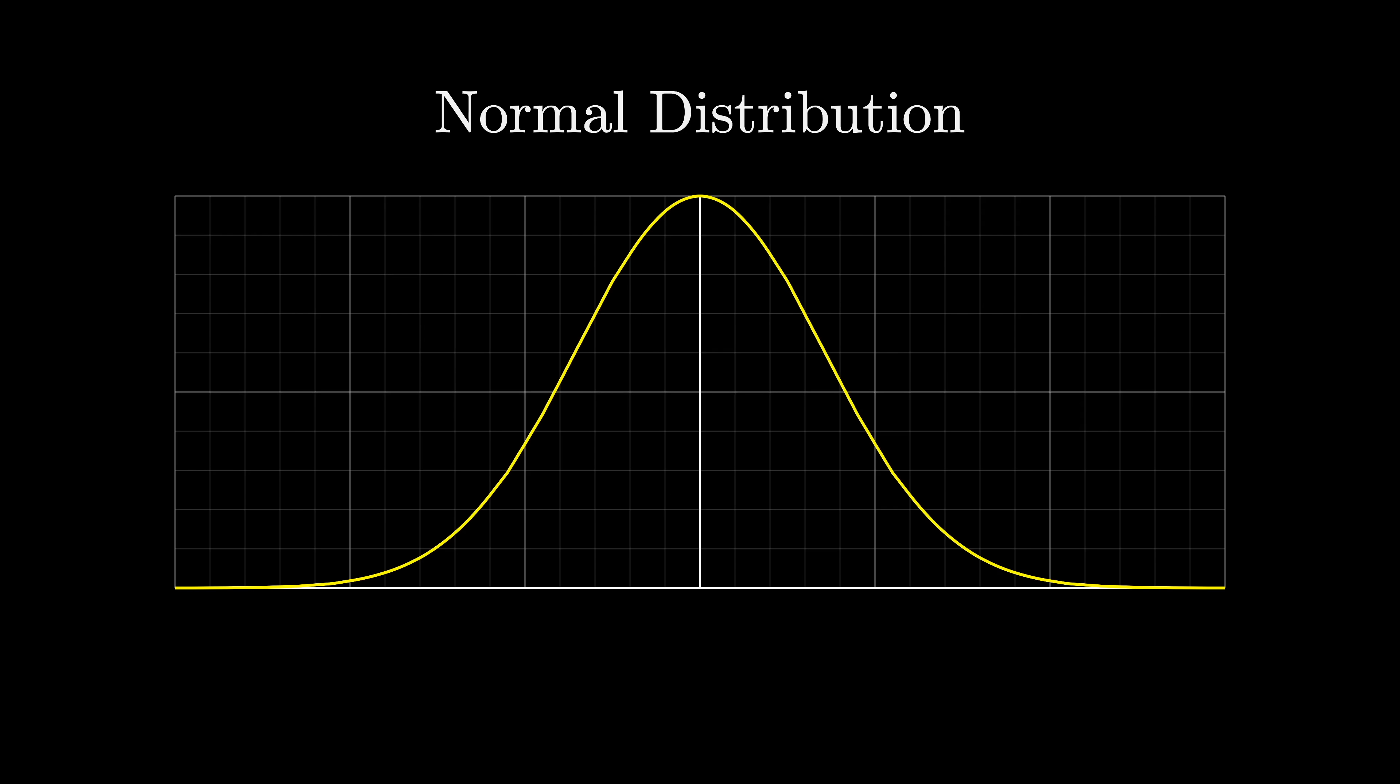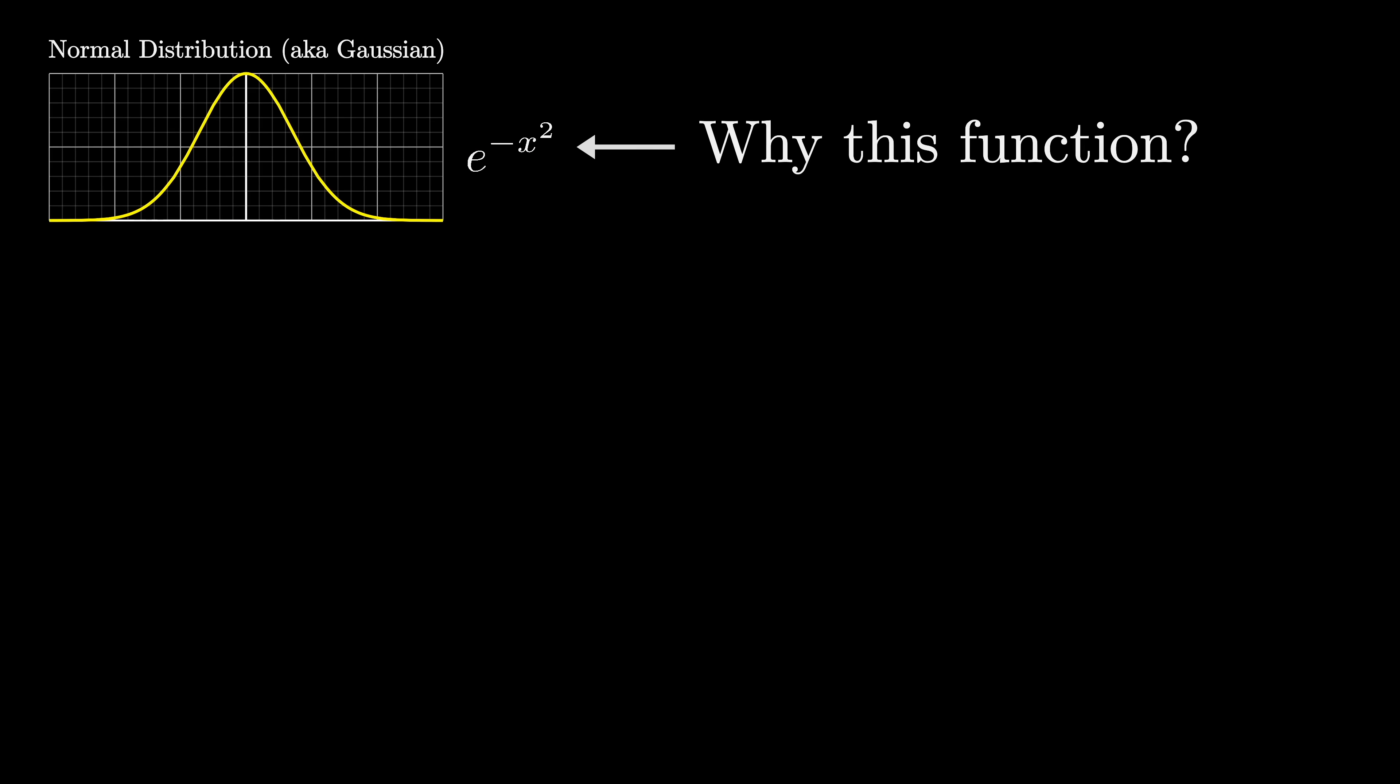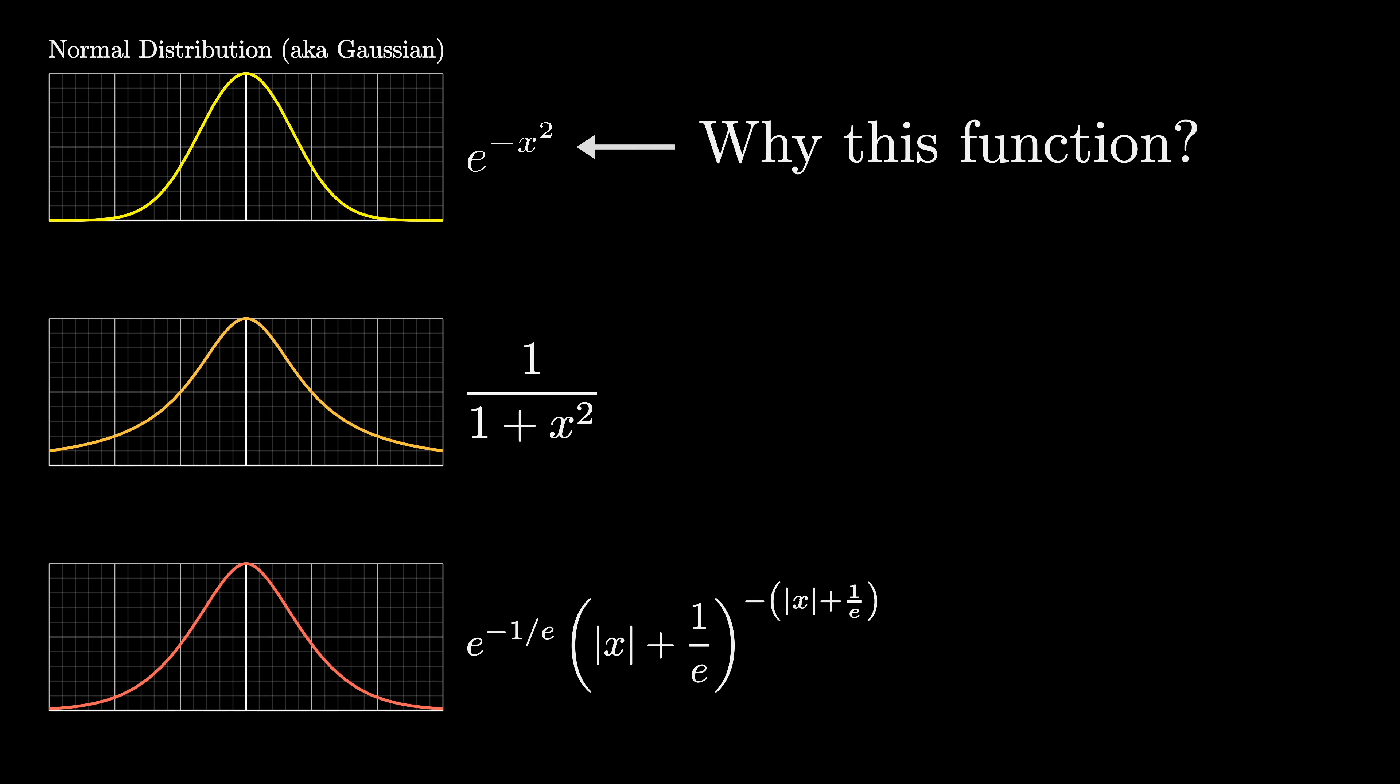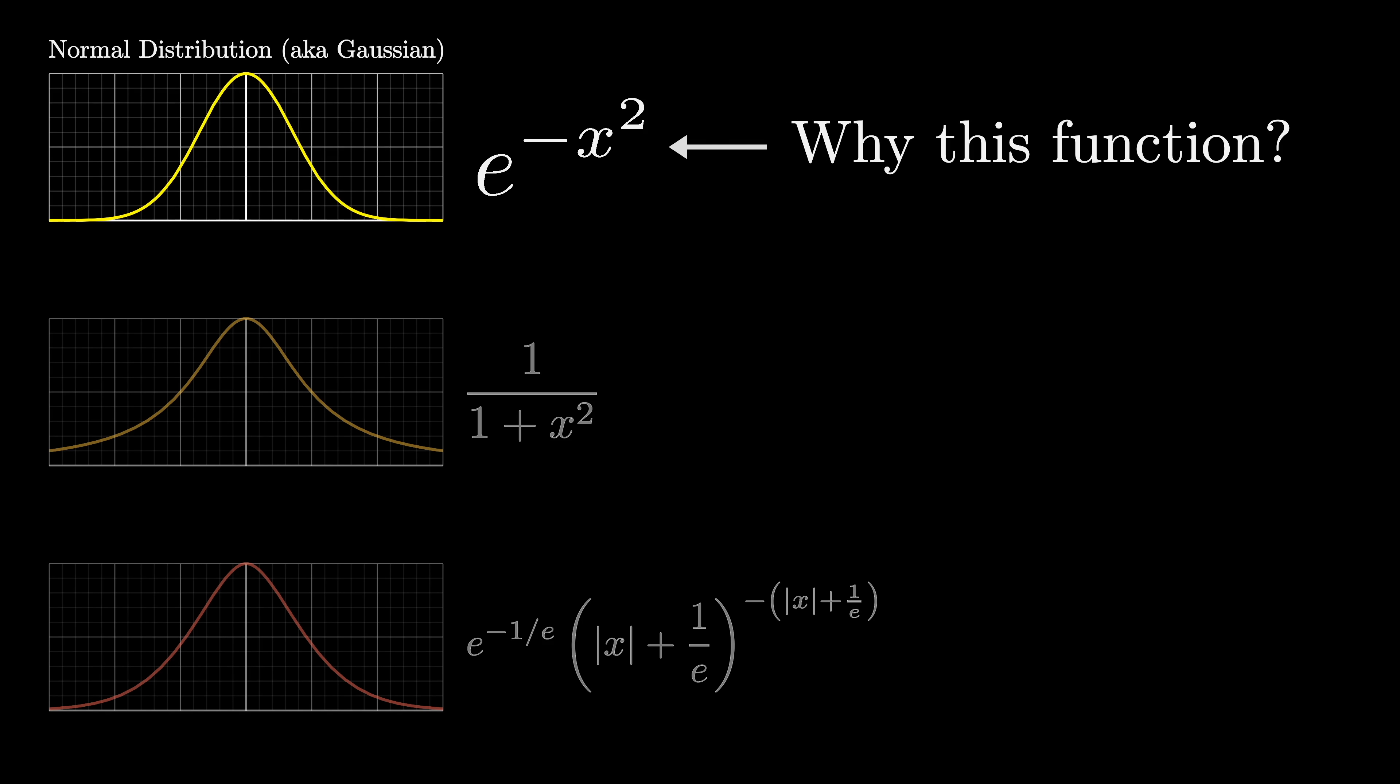The basic function underlying a normal distribution, aka a Gaussian, is e to the negative x squared. But you might wonder, why this function? Of all the expressions we could dream up that give you some symmetric smooth graph with mass concentrated towards the middle, why is it that the theory of probability seems to have a special place in its heart for this particular expression?